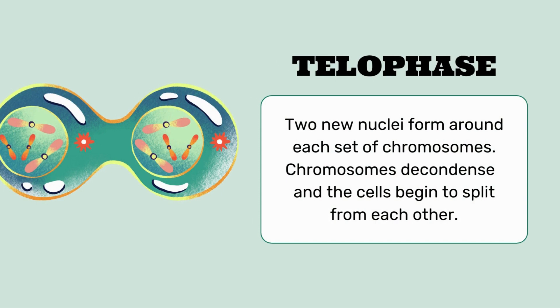It is the stage in which the cell is divided into two cells. The cell shrinks and forms in the middle, forming two separate cells, in which two nuclei form around each set of chromosomes. The chromosomes decondense and the cell begins to split from each other. In this diagram, you can see the nucleolus and centrioles, and the chromatids are present in a cell.